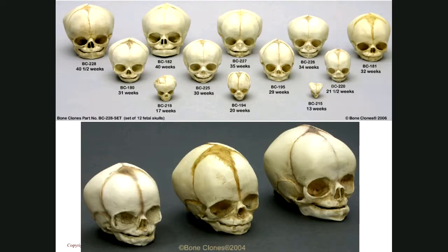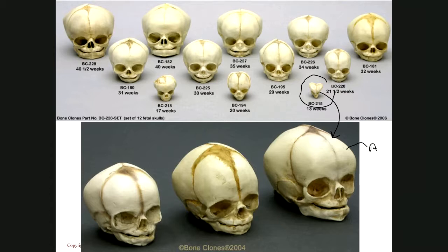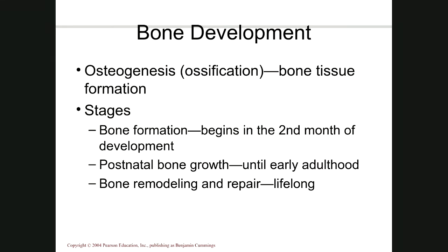Bone development happens in visible stages. Look at this 13-week-old fetus — the skull looks very different not just in size but also in shape compared to an adult. The first stage is called bone formation, which begins during the eighth week of gestation. Around week eight, we get our very first bone cells — before that, embryos have no bones at all.